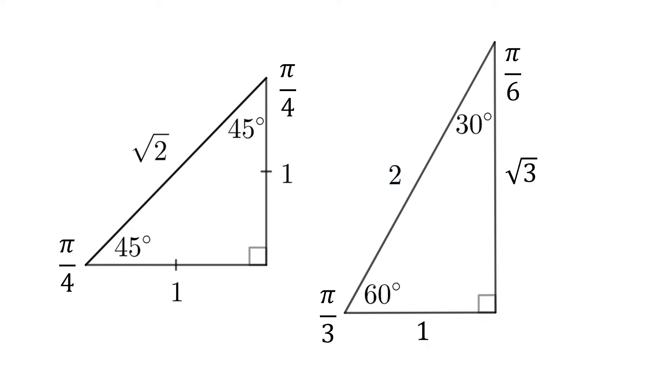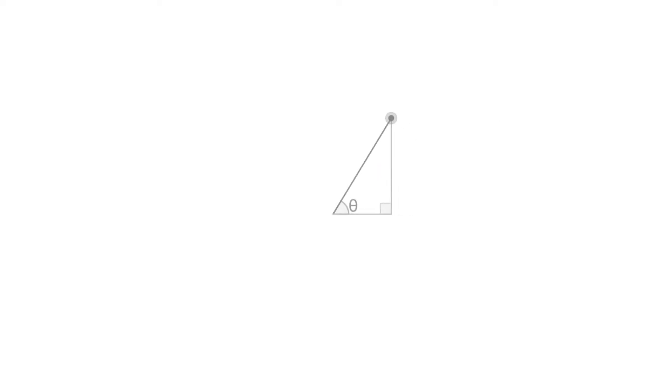Now with these triangles, we can find sine, cos, and tan for 30, 45, 60, or in radians, pi on 6, pi on 4, and pi on 3. They're all acute angles, but if you want to look at other angles, such as obtuse angles, you'll need to move on to the unit circle.